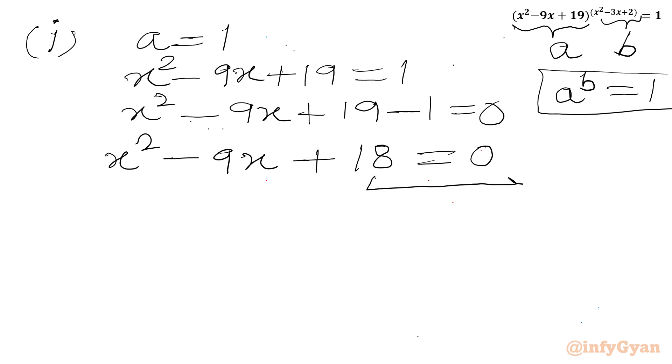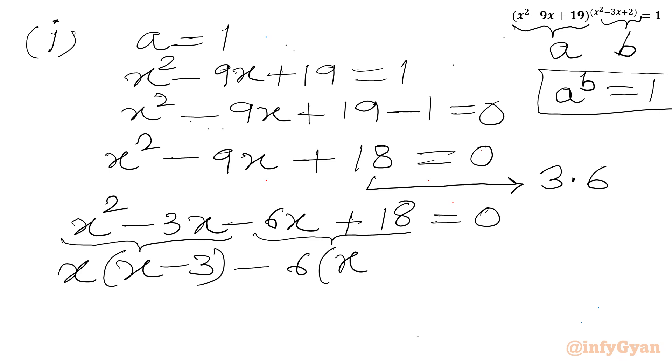Now I can find factors of 18. We can see 3 times 6 is 18, and if I will add both I will get middle coefficient 9. So I can split our middle term minus 9x as minus 3x minus 6x and product will be 18x square equal to 0. Now I can take x common from here, so in the bracket we will get x minus 3. From last two terms I can take negative 6 common out, we will get x minus 3 equal to 0. So we have x minus 3 times x minus 6 equal to 0. From product 0 rule we will be getting x equal to 3 and x equal to 6. Two real solutions.